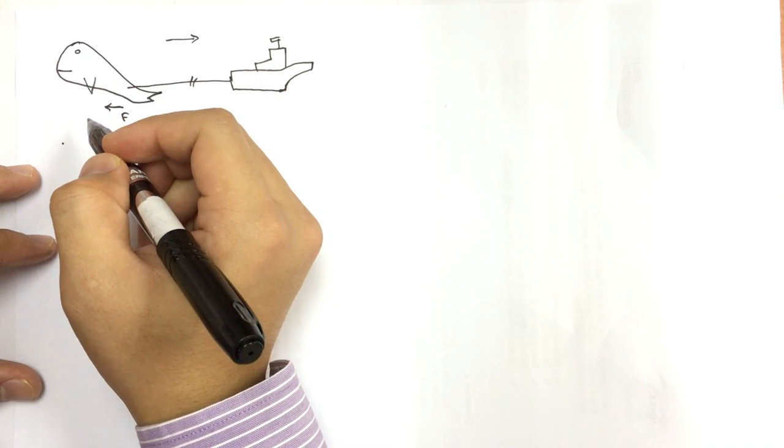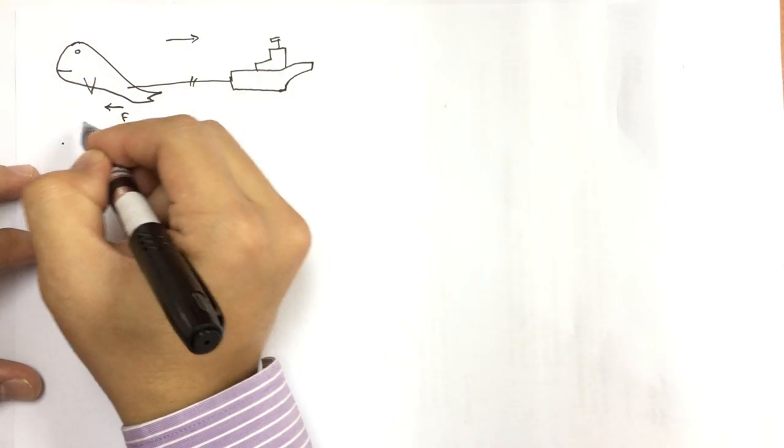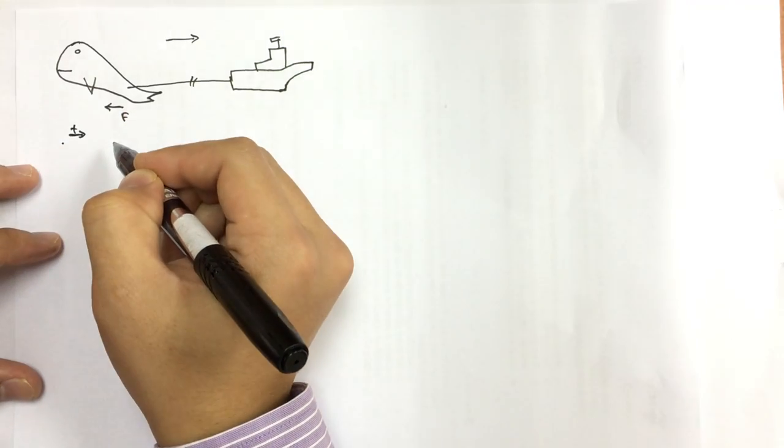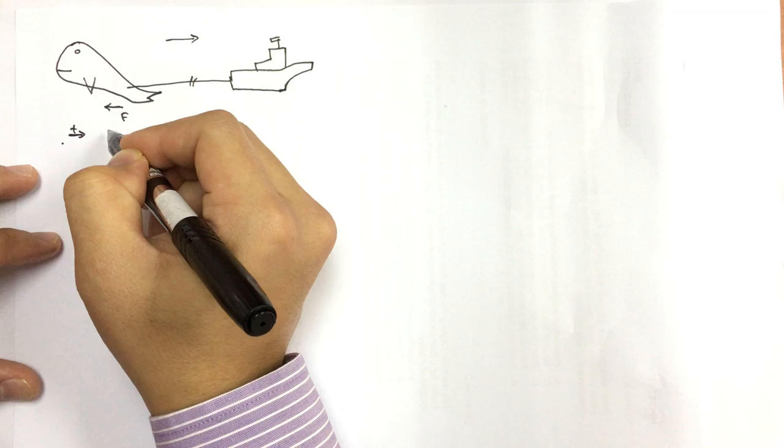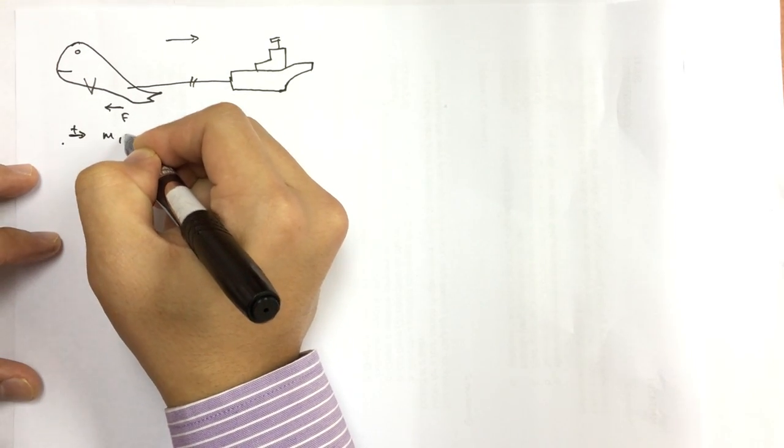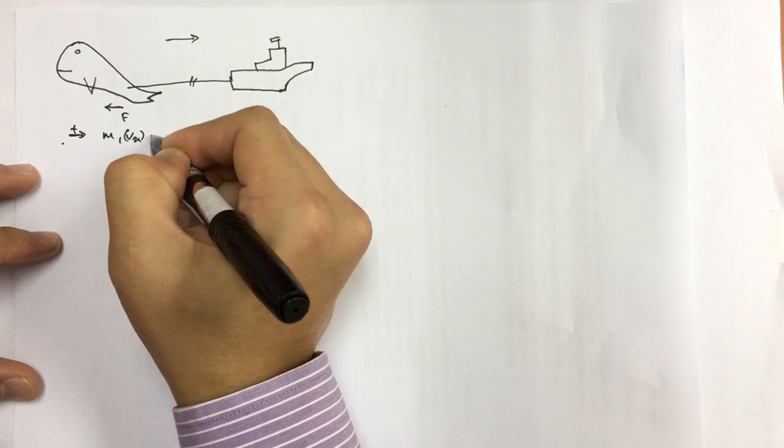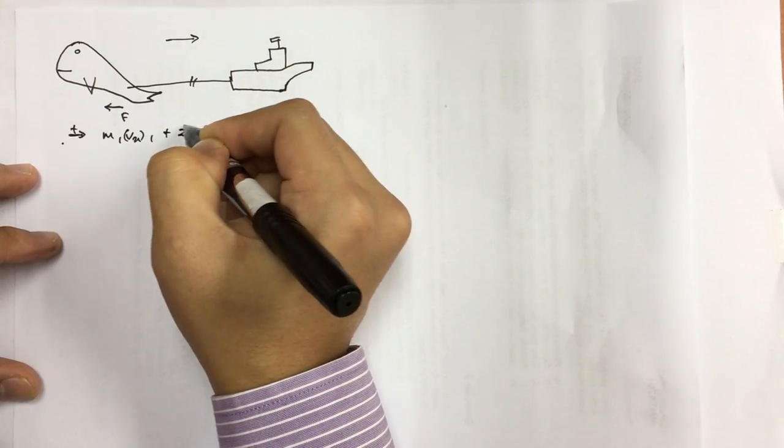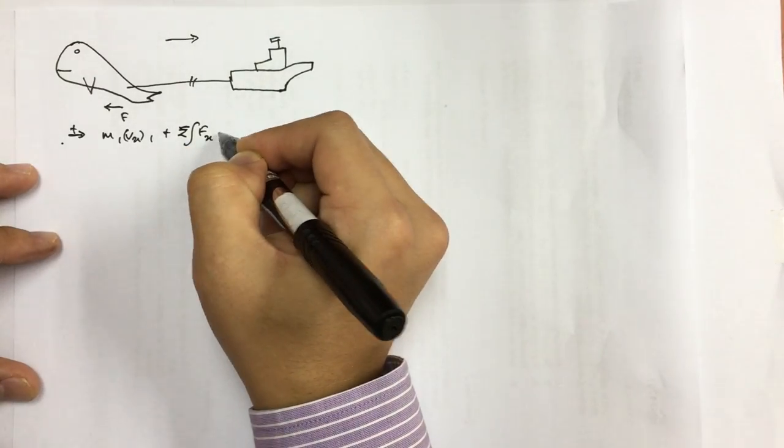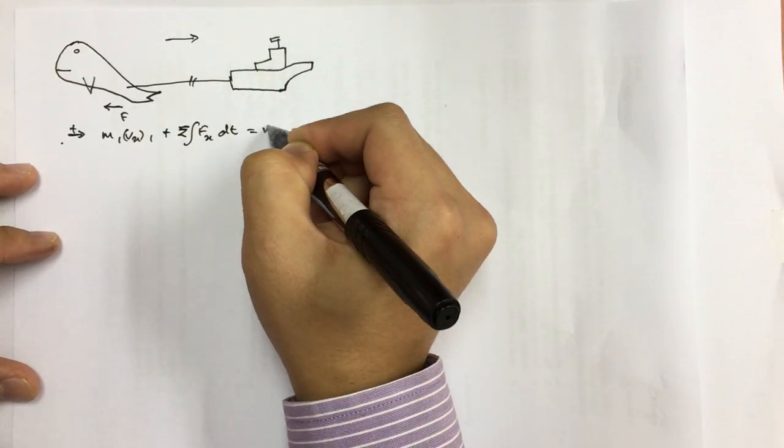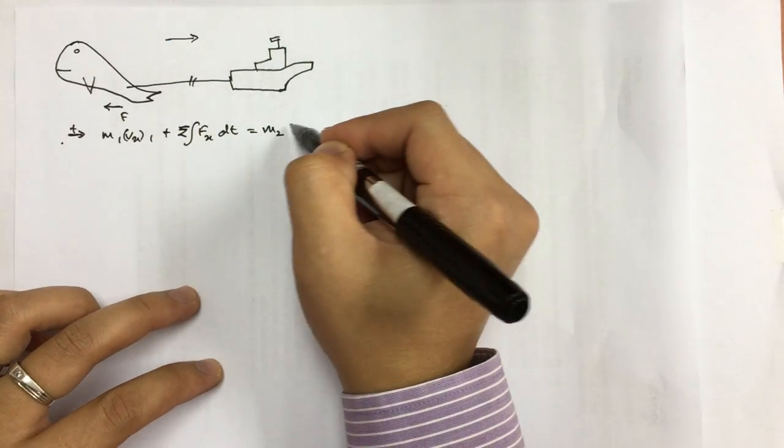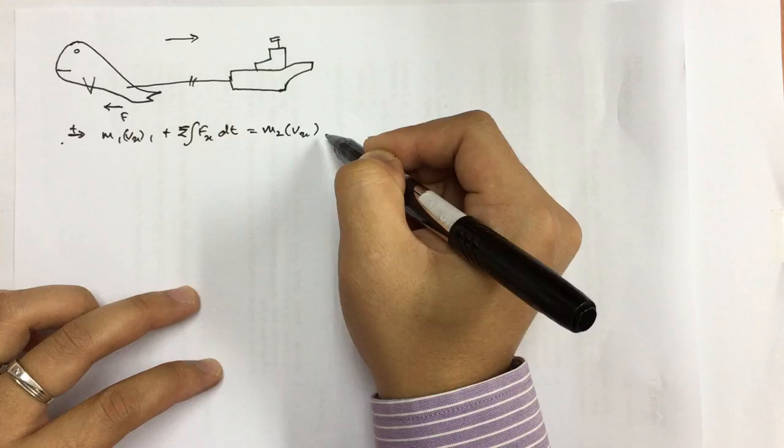This is the momentum equation. Going to the right is positive. M1 Vx1 plus sigma Fx dt equals to M2 Vx2. The first state and the second state.